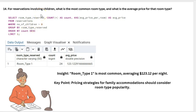For reservations involving children, what is the most common room type and what is the average price? The average price for room type 1 is $123.12.